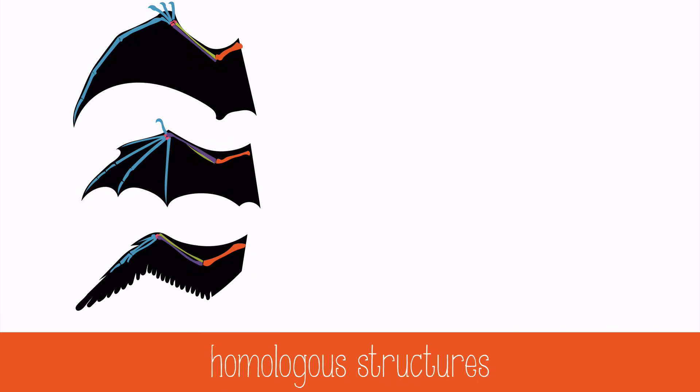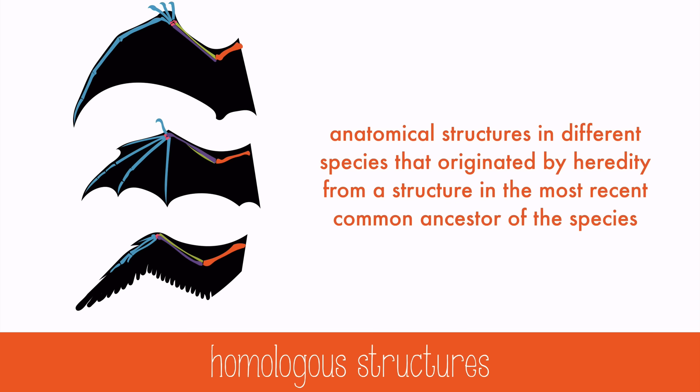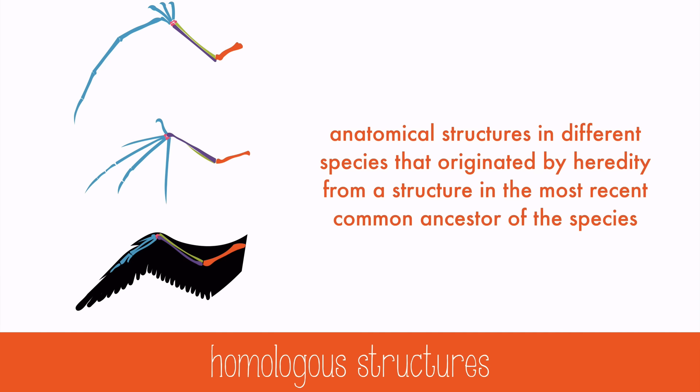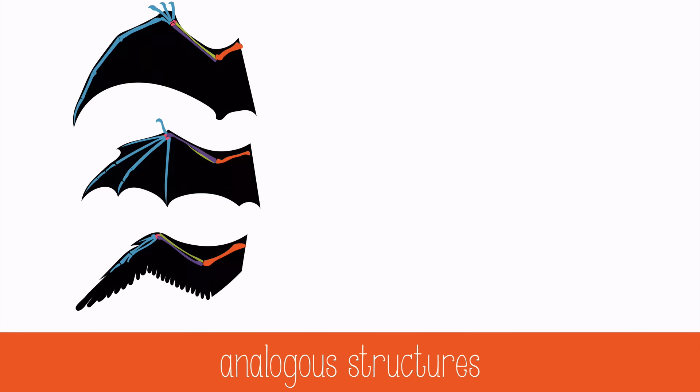Now we're going to look at the anatomical evidence for evolution. Homologous structures help scientists find relatedness among species. These are anatomical structures in different species that originated by heredity from a structure in the most recent common ancestor of the species. For example, if you look at the bone structure of a pterodactyl, a bat, and a bird, you'll see some basic similarities. This suggests they had a common ancestor with a similar forearm structure perhaps very long ago.